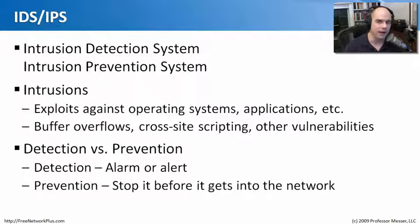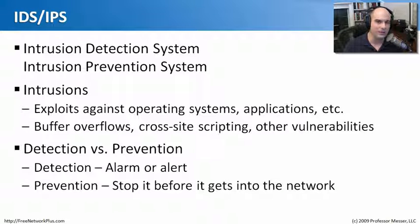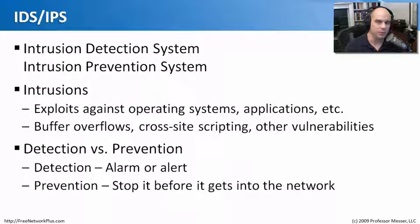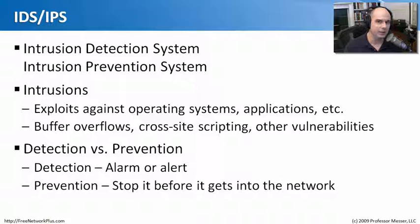If you want to automatically stop a buffer overflow from occurring, you would want an IPS — the prevention system stops it before it gets into your network. You have the option to turn on or turn off that packet from flowing through. With so many vulnerabilities in operating systems, large worms, and application issues, it's very useful to have a security device like this in your network to prevent these things from happening.